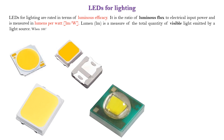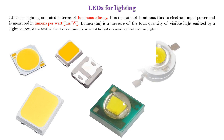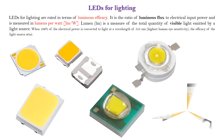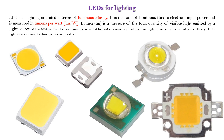When 100% of the electrical power is converted to light at a wavelength of 555 nanometers — the highest human eye sensitivity — the efficacy of the light source attains the absolute maximum value of 683 lumens per watt. The maximum value for white light is about 350 lumens per watt.